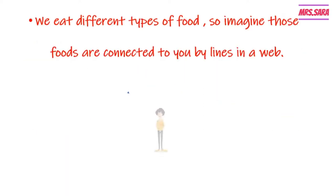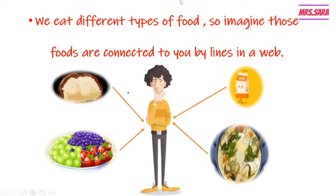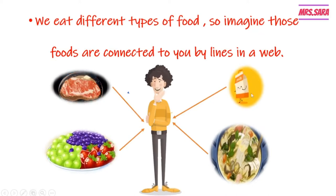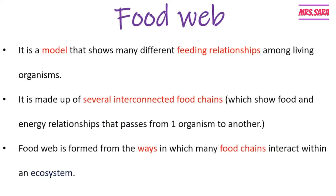We eat different types of food. If we imagine those foods are connected to our body by lines, this is called a web. When you imagine arrows or lines connected between you and the food, this is called a food web. A food web is a model that shows many different feeding relationships among living organisms.